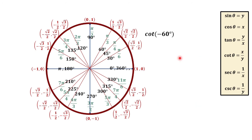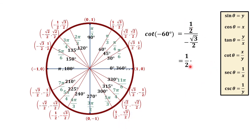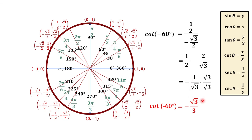For cotangent of negative 60 degrees, this gives a clockwise rotation, which is the same as 300 degrees, since 300 degrees and negative 60 degrees are coterminal angles. Cotangent is x over y, so we use one-half over negative square root of 3 over 2. Multiplying by the reciprocal, the 2's cancel, giving negative 1 over square root of 3. Rationalizing by multiplying by square root of 3 over square root of 3, cotangent of negative 60 degrees is equal to negative square root of 3 over 3.